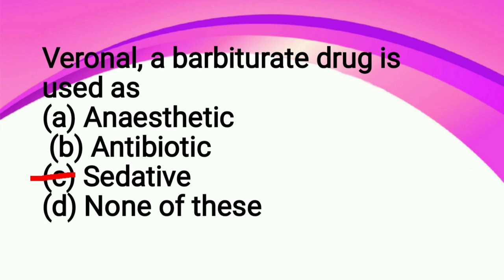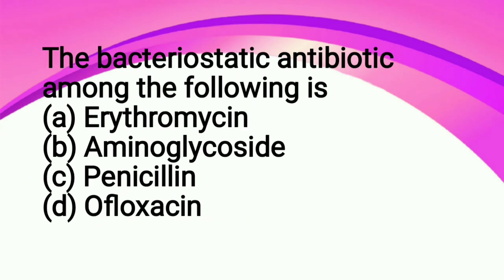A bacteriostatic antibiotic among the following is: A erythromycin, B aminoglycoside, C penicillin, D alphoxin. So what is bacteriostatic? You should know that bacteriostatic drugs stop the growth of bacteria.